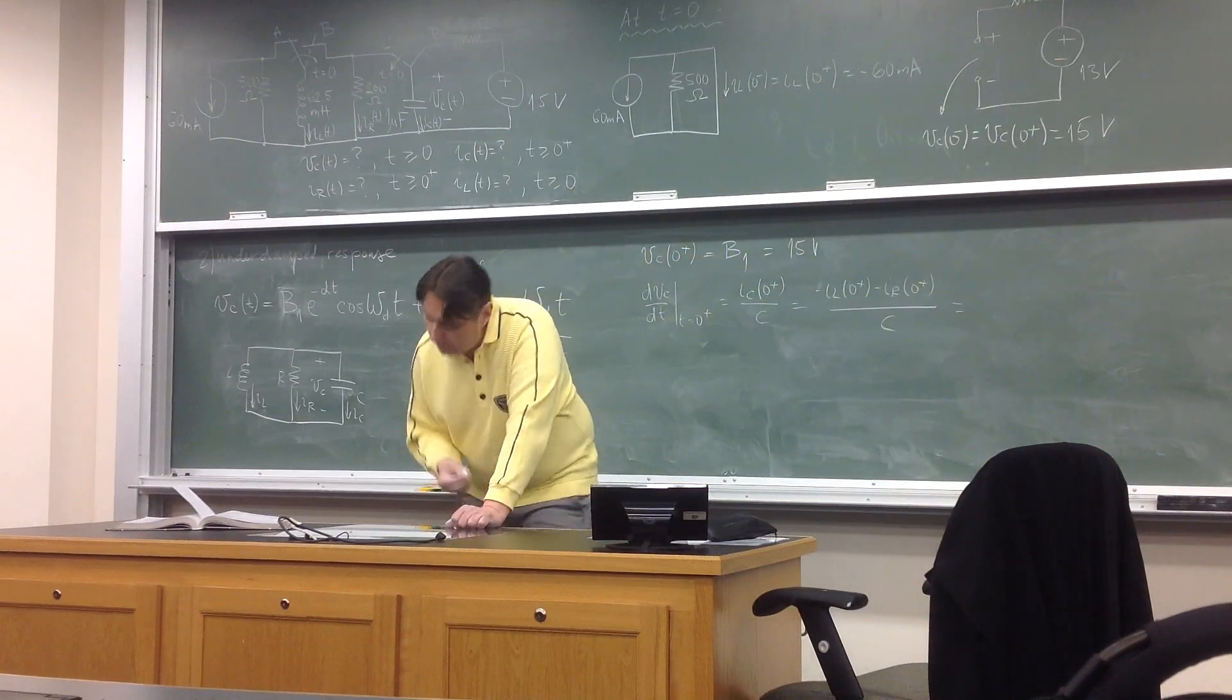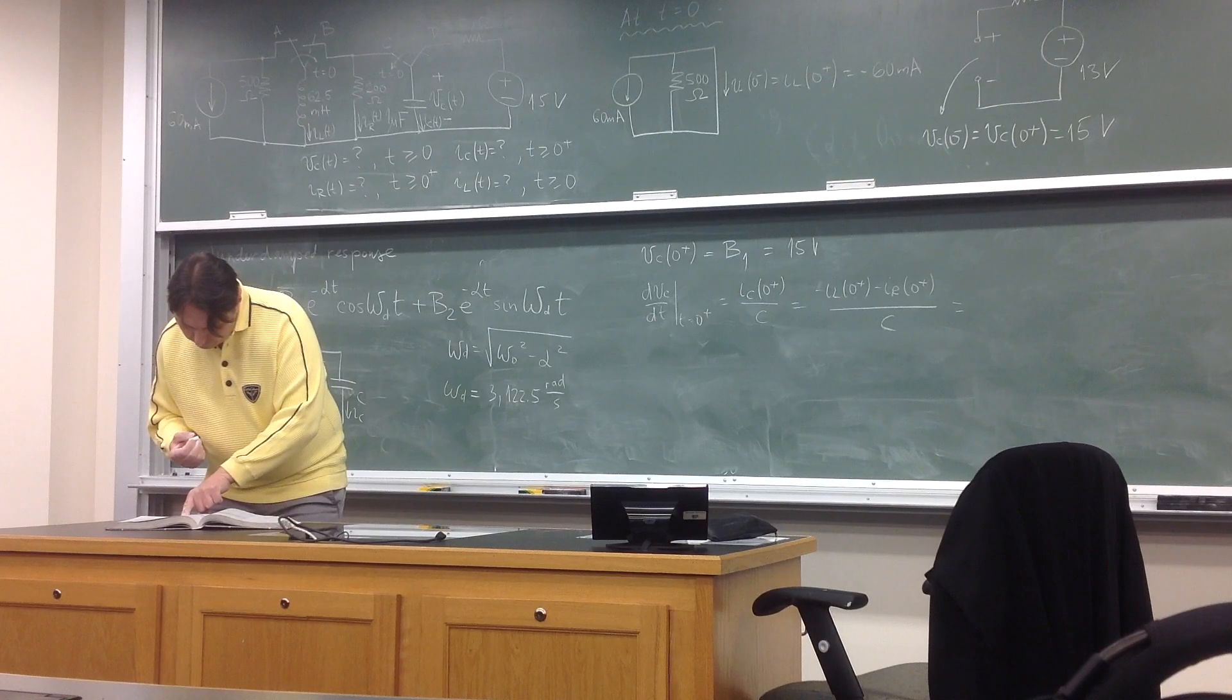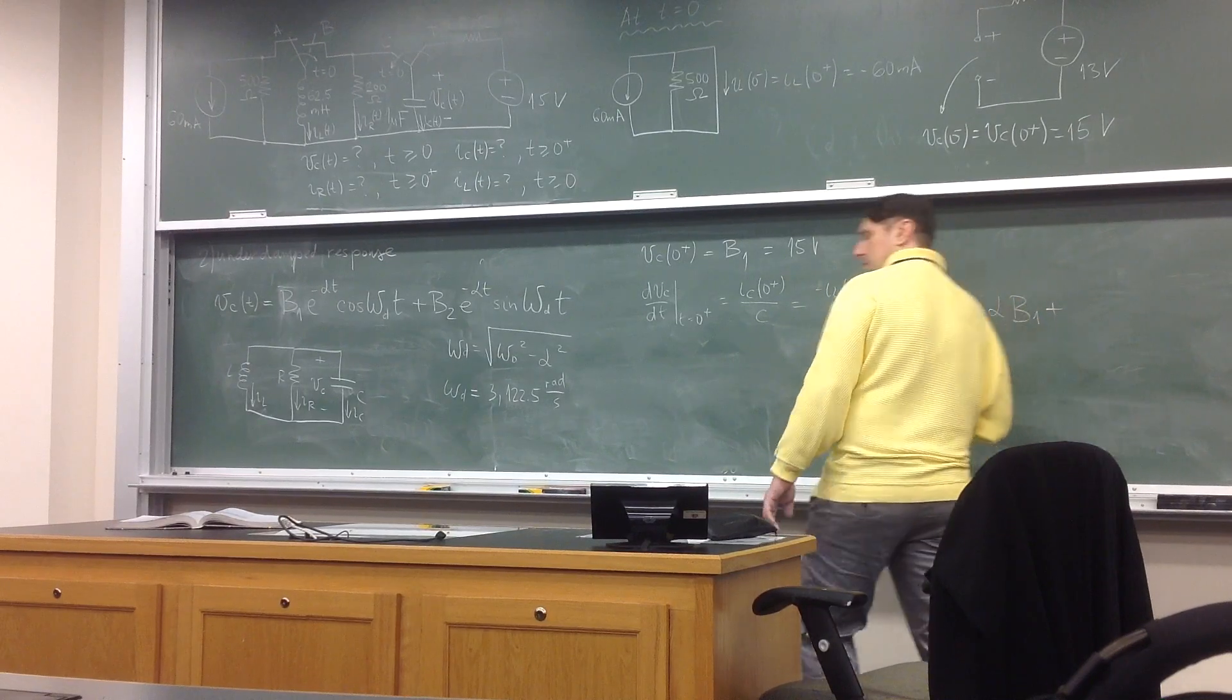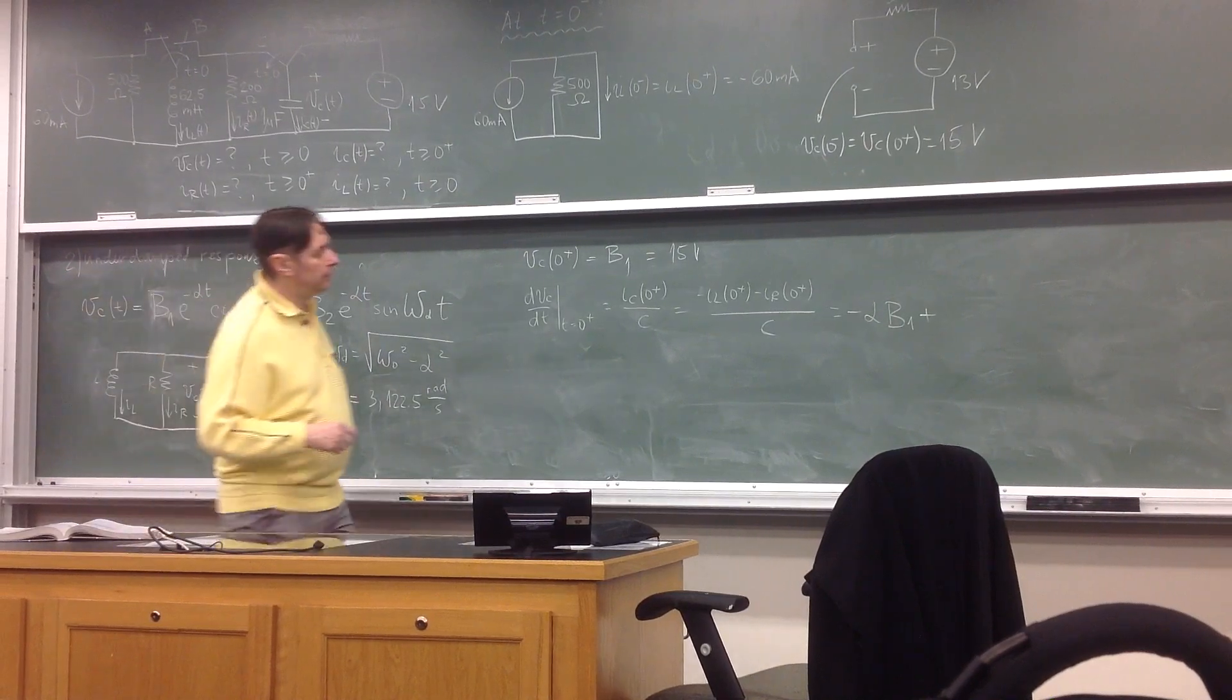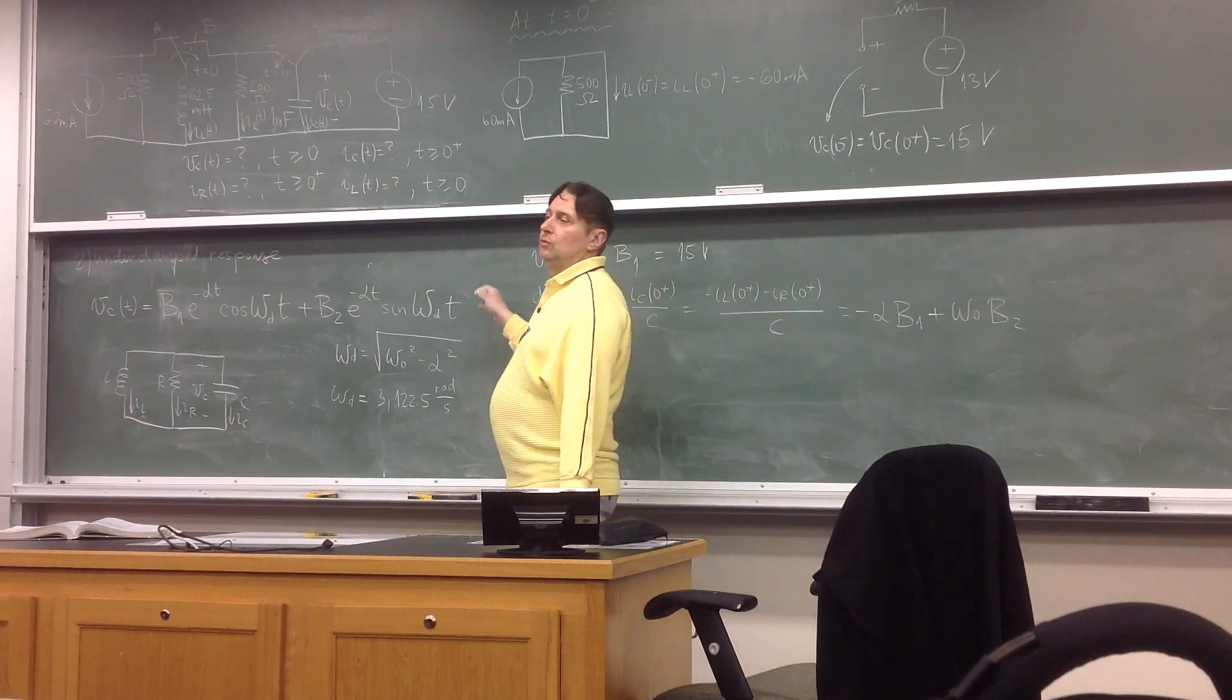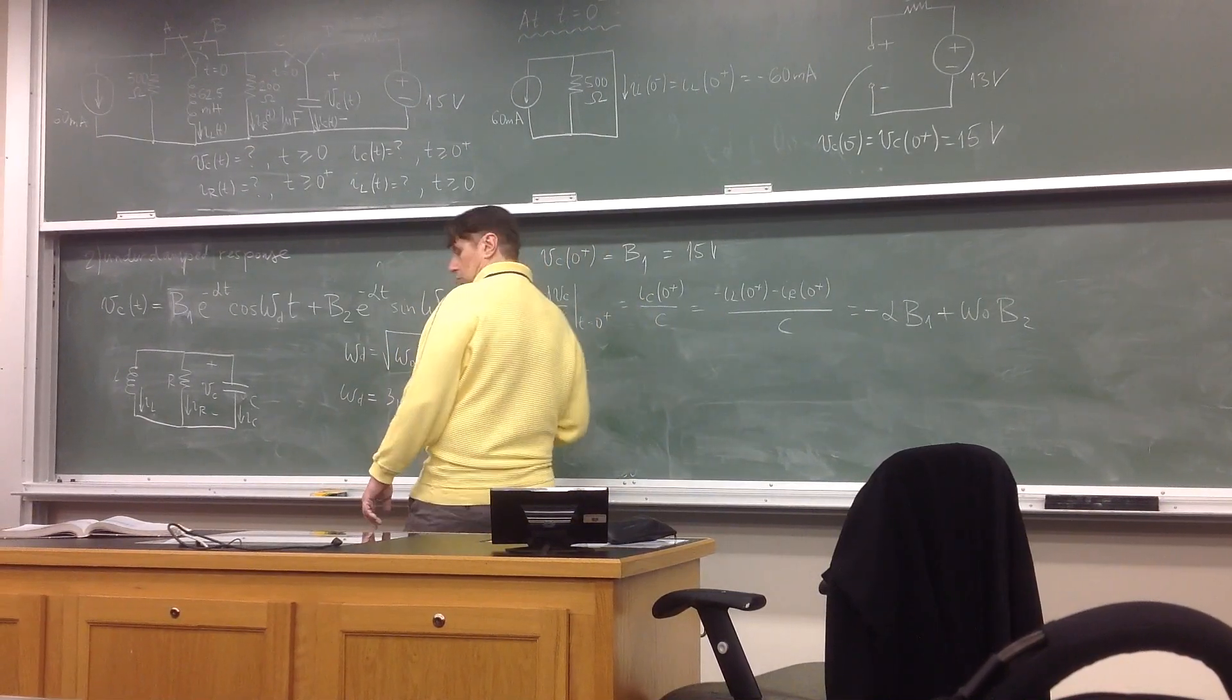Minus alpha B1 plus omega zero B2. That means if you take the first derivative of this, then do t equals zero plus, that's what you get, okay? So when you do these two, you'll get B2. When you do it, B2 turns out to be 7.21, ugly.